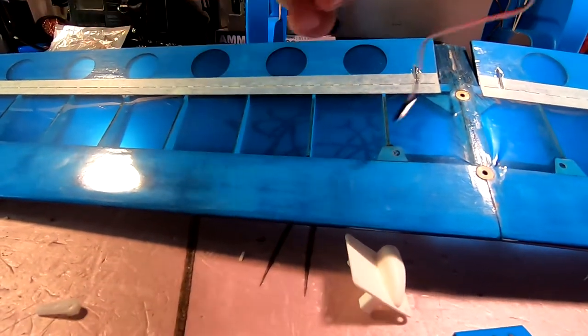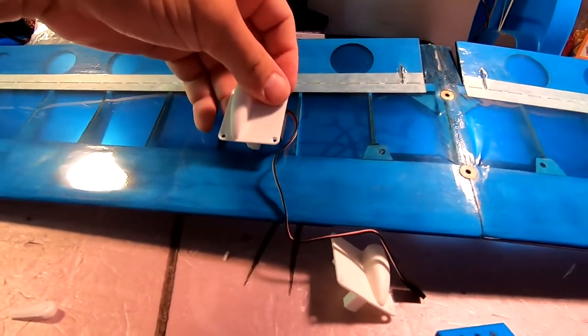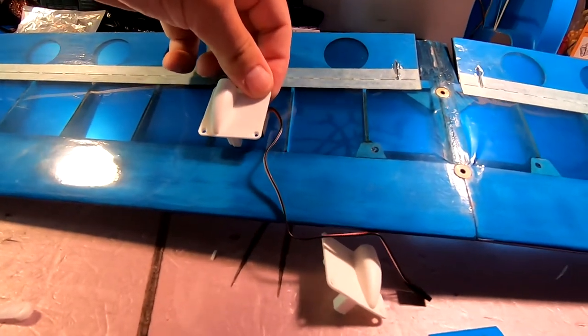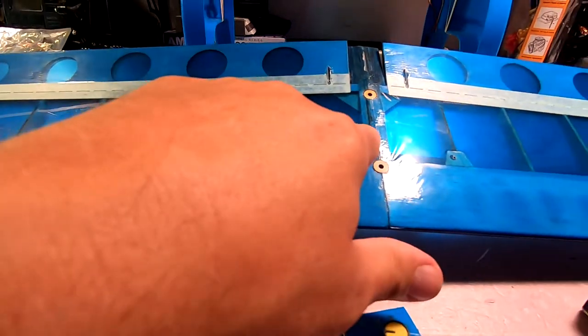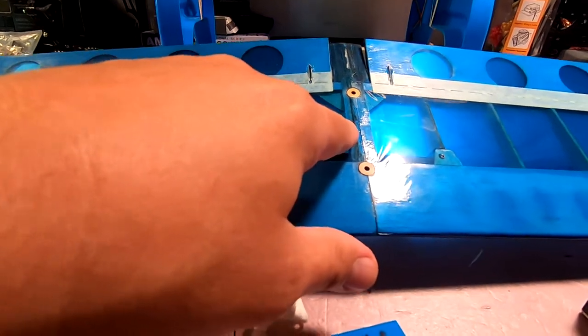Now, the wire is long enough that I can't stretch it out because I'm holding the camera with one hand, but the wire is long enough that I can put the servo here, run the wire through the wing, and have it come out right here near the center of the wing. That's going to work out perfectly.